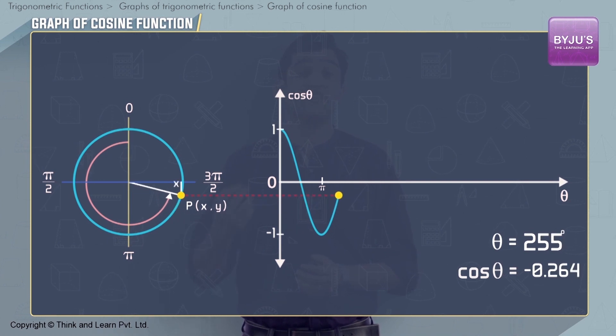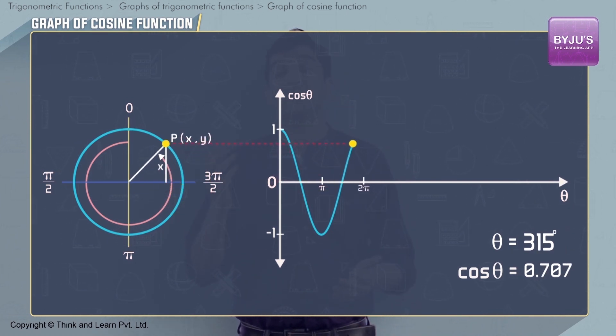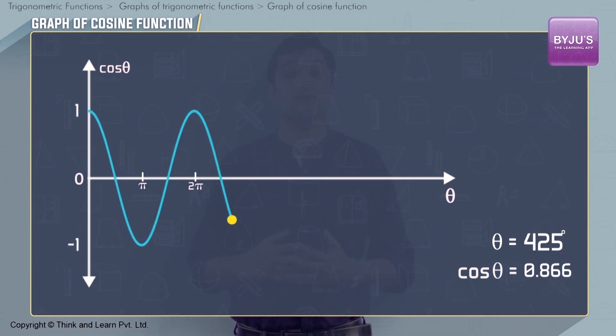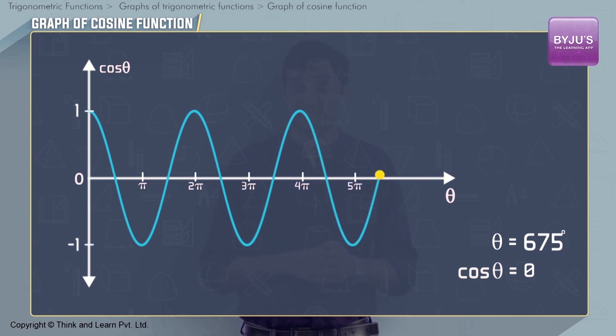As theta increases to 3π/2, cos theta becomes 0 again, and at full rotation, cos theta is 1. This graph will extend by repeating patterns for all values of theta.